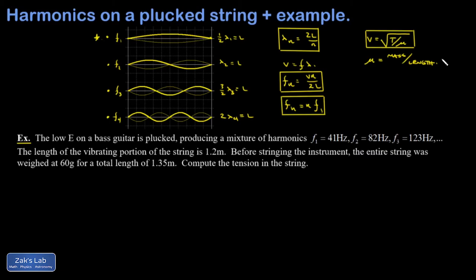So our example says we're plucking a low E on a bass guitar. And we get a mixture of harmonics. And the first one, that's the fundamental, is 41 hertz. That's a low E. But we also get all these overtones that are simultaneously ringing. So all of these higher vibrations are also survivors because they interfere constructively with themselves.